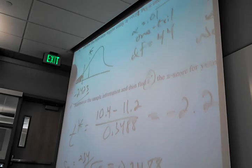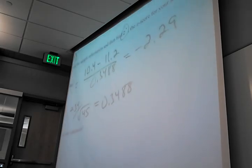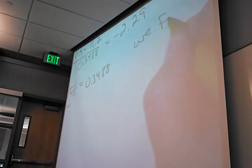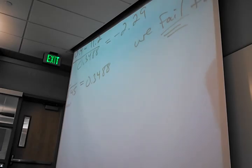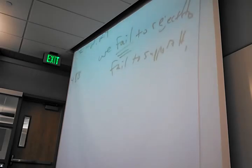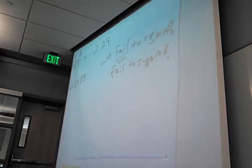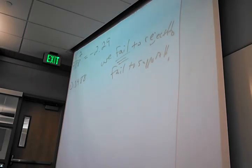We have not found sufficient evidence. We fail to reject H0. We fail to support H1. Those are actually the same thing written twice. We fail to reject H0 - we fail to say the null is wrong. So we fail to say the alternate is right.